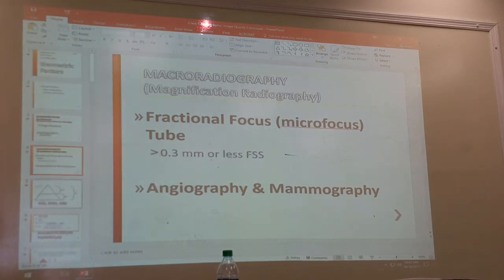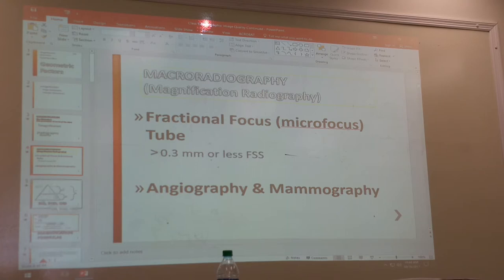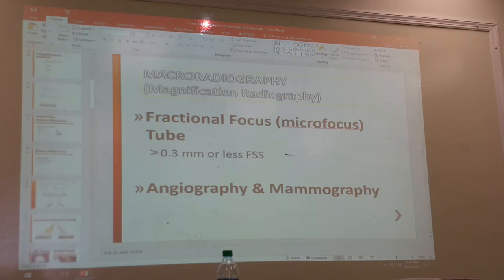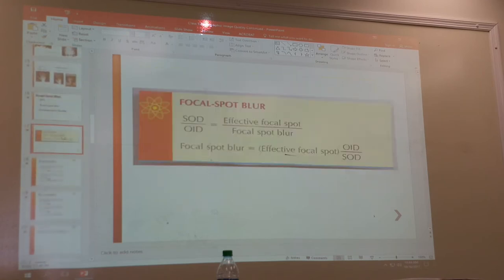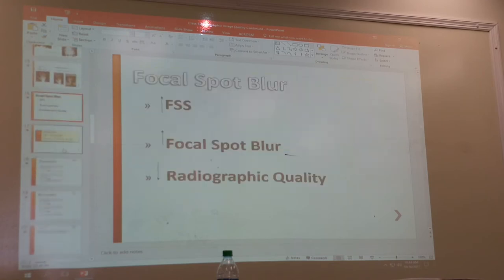I can ask a question like that. The size of fractional focus tubes is 0.3 millimeters or less. So we talked about shape distortion, elongation, foreshortening — and I think this is where we stopped from last week.